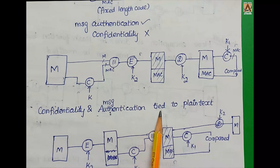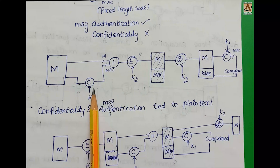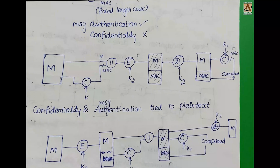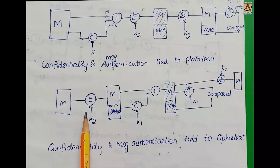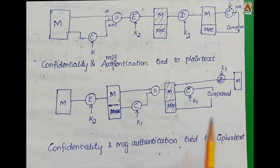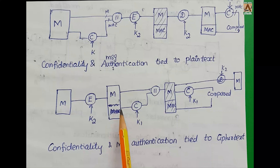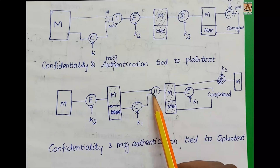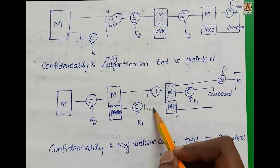This diagram represents confidentiality and message authentication tied to plaintext. We start with plaintext and process it for authentication. We then encrypt to produce ciphertext. Using a second randomly generated key, we encrypt the message, then apply a MAC function using another key and append the encrypted message with the MAC code to produce the final MAC-encrypted output.